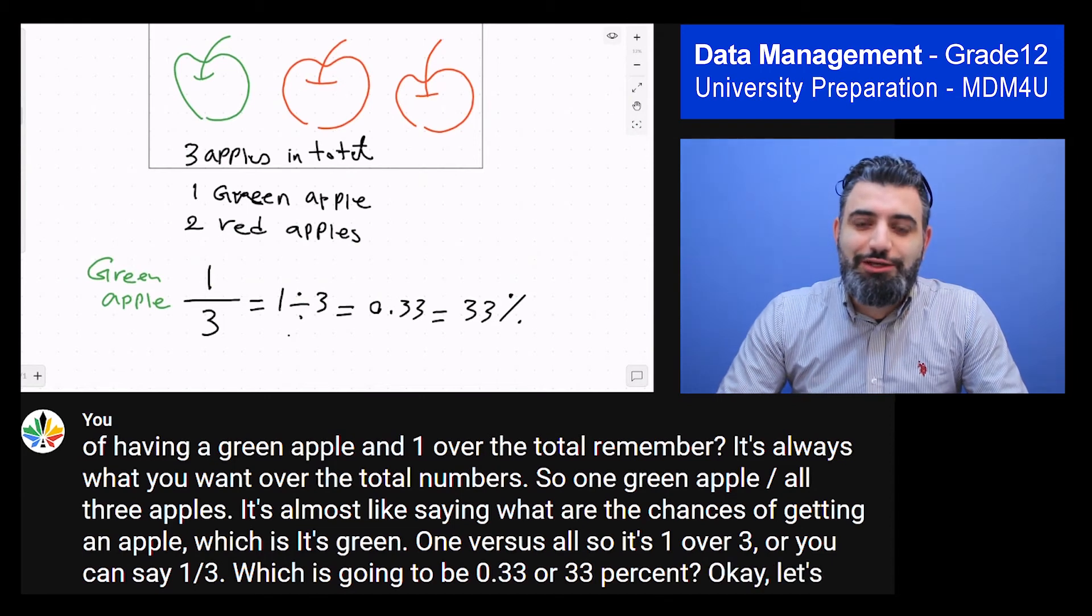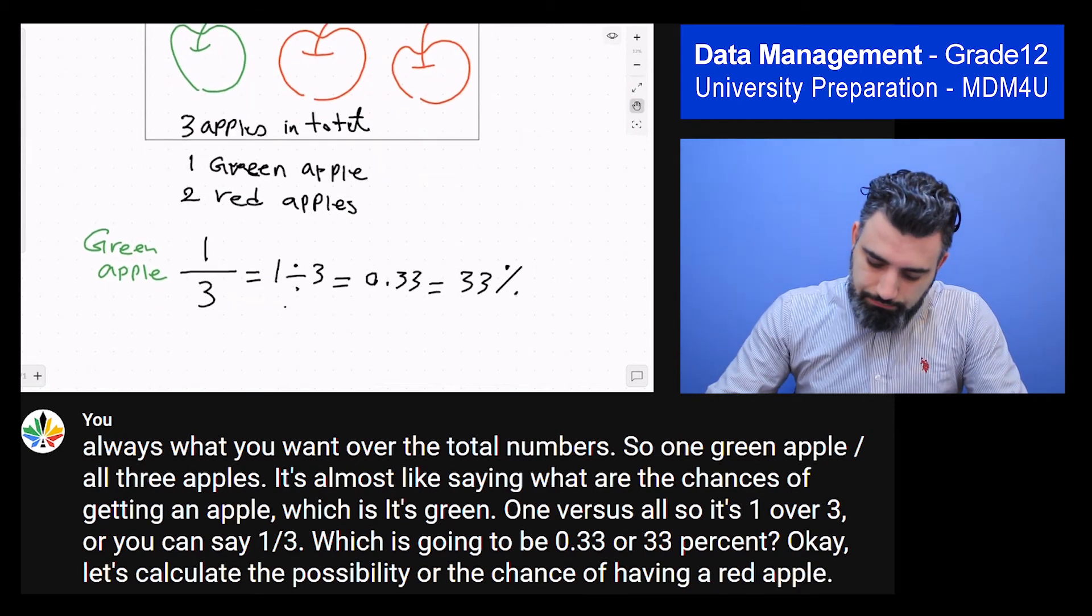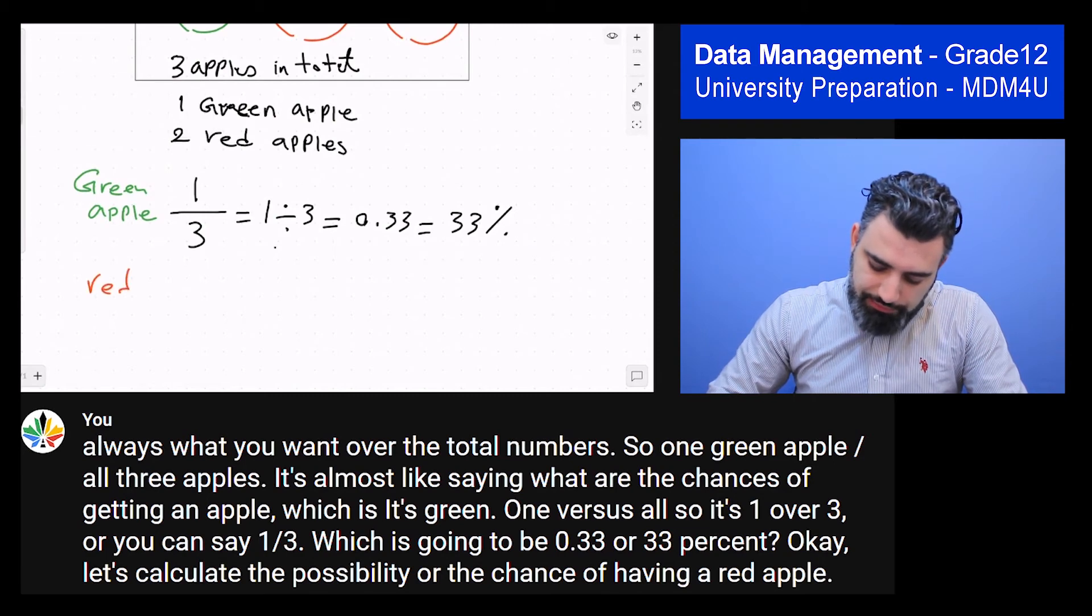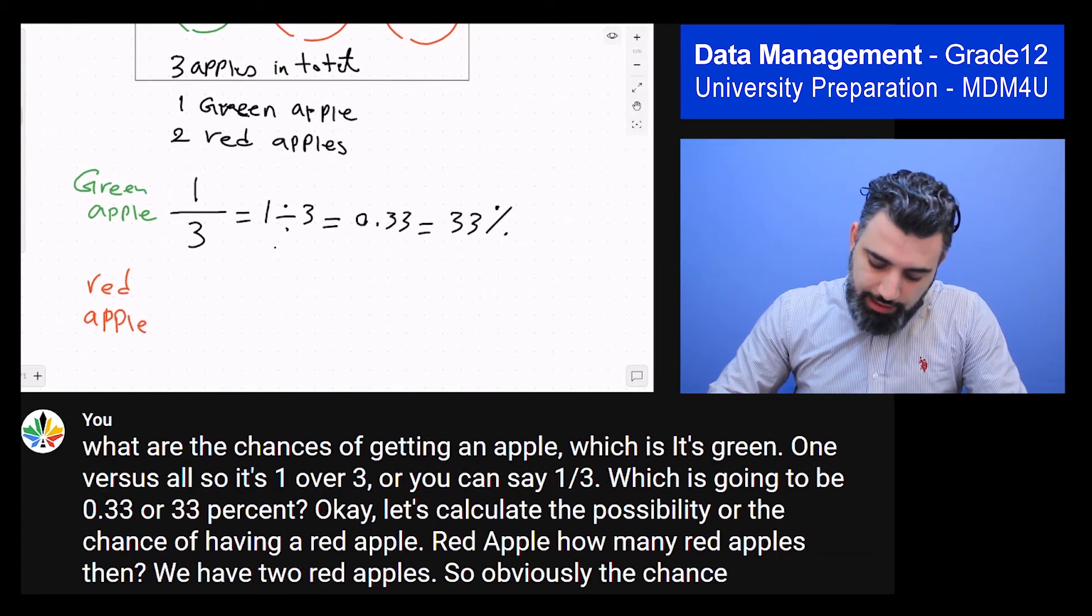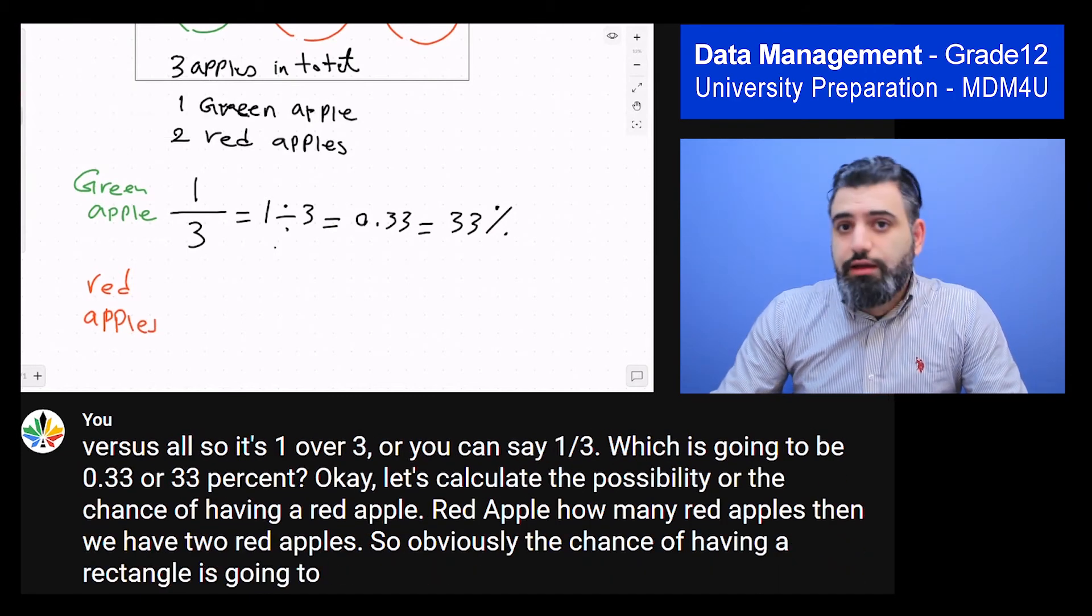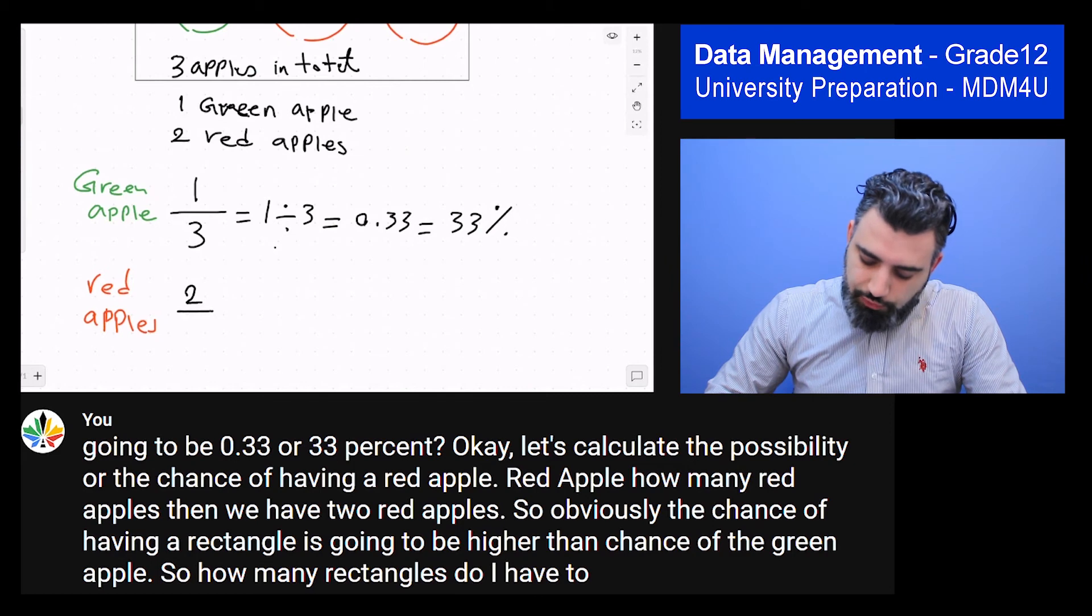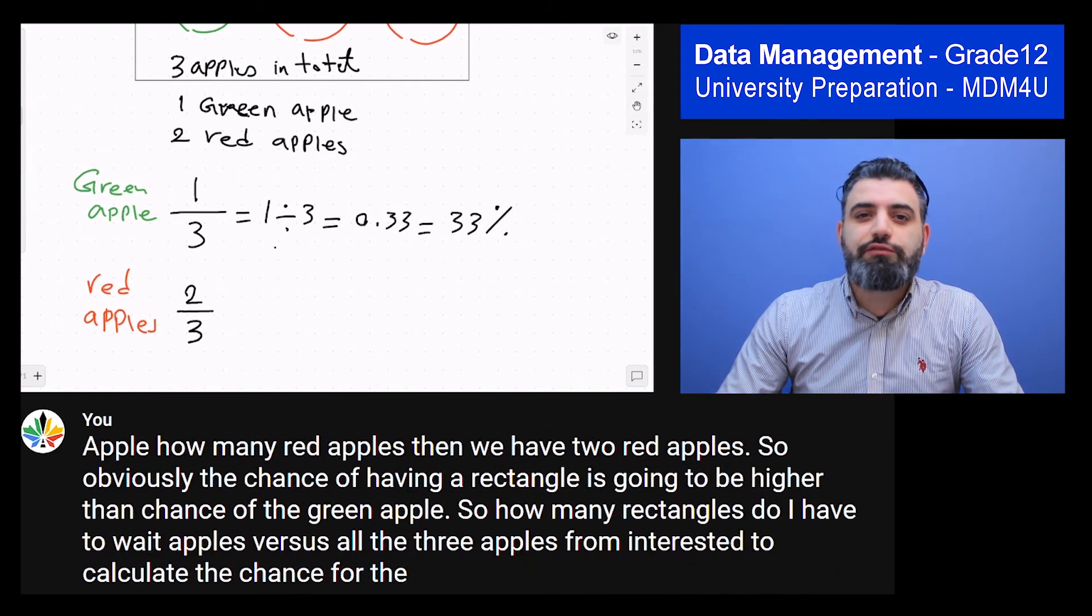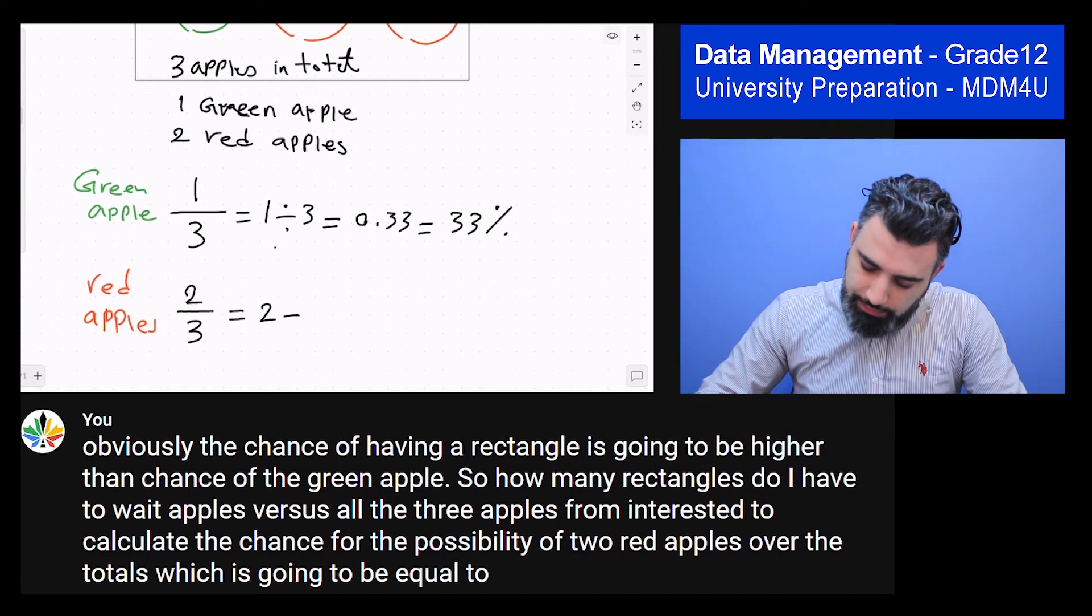Let's calculate the possibility or the chance of having a red apple. How many red apples do we have? Two red apples. So obviously, the chance of having a red apple is going to be higher than the chance of a green apple. So how many red apples do I have? Two red apples versus all the three apples. So I'm interested to calculate the chance or the possibility of two red apples over the total, which is going to be equal to two divided by three equal to 0.66.